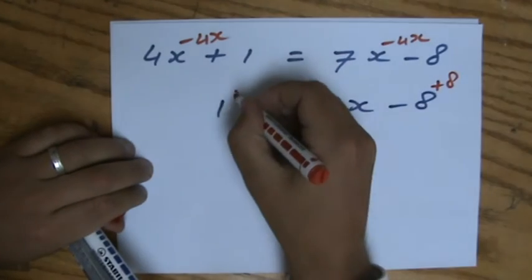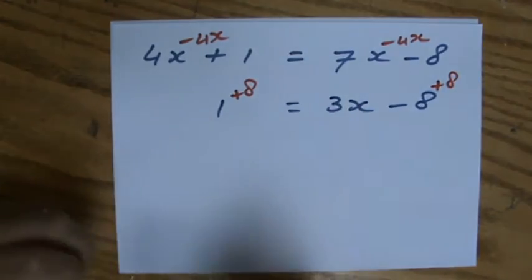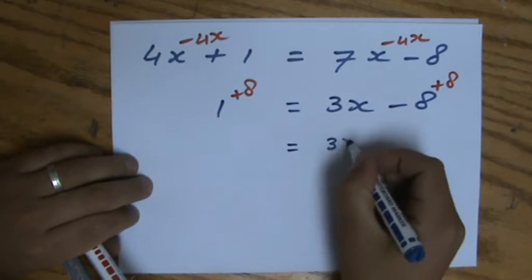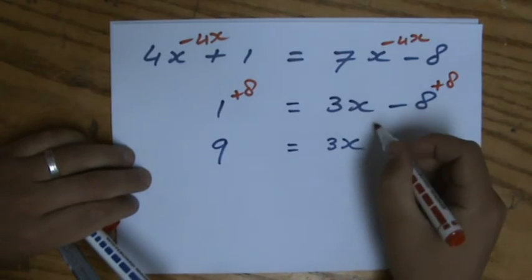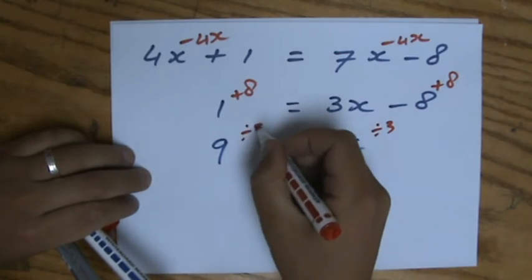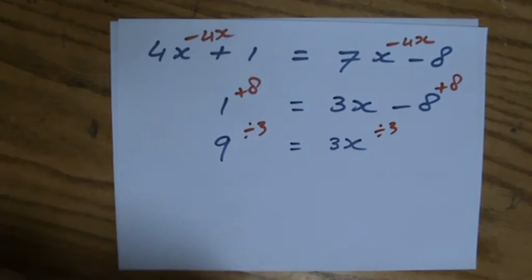Minus 8. Opposite operation. Inverse operation. Plus 8. So 3X equals 9. And then, eventually, I will divide by 3. So 9 divided by 3. X equals 3.